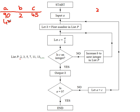So basically A has become 90 divided by the first prime number — 45. Let B be the first number in list P, still 2. Let C equal A divided by B — A divided by B is 22 and a half. Is C an integer? The answer is no.